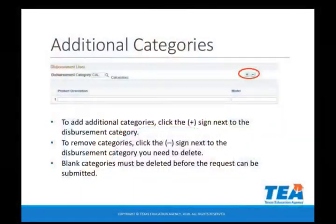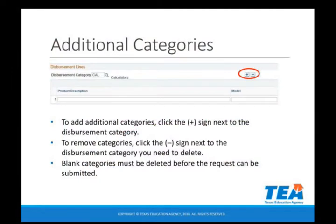For a technological equipment request, you need to be mindful of putting everything in the correct category. If you look at the slide, you can see that you need to add categories by clicking on the plus sign next to the disbursement category to add additional categories. For example, if you were to purchase laptops, a charging cart, and Chrome management licenses, you would need two different categories: a laptop category and an equipment support category for the Chrome management licenses and the laptop charging cart.